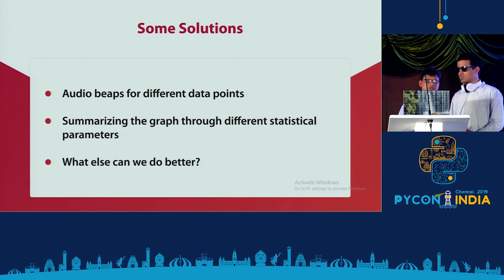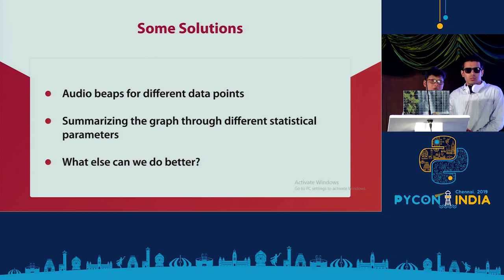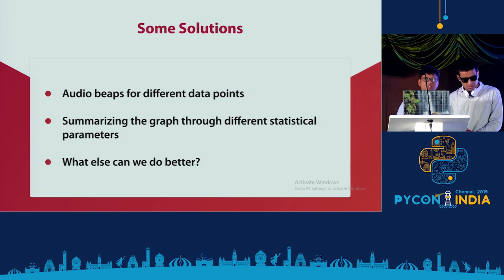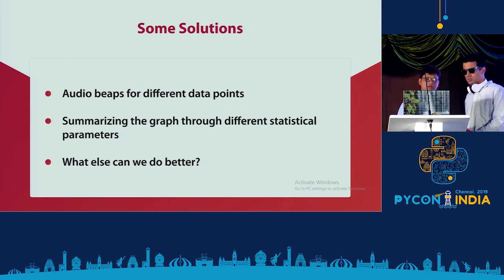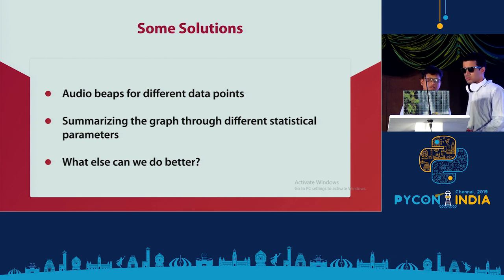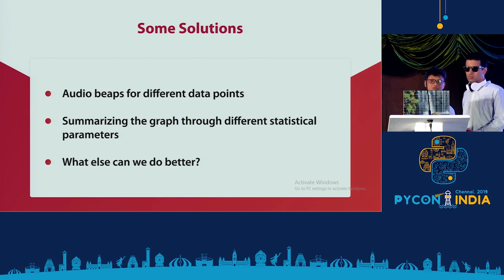Another approach is to pull out statistical quantities — similar to what auto-ML models do — applying algorithms like change-point detection or running a window to extract important features, and then presenting those to a visually impaired person in tabular or another accessible format.